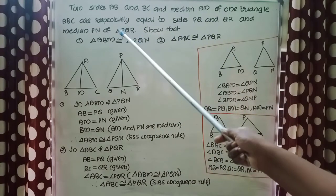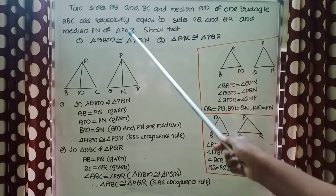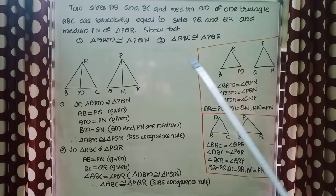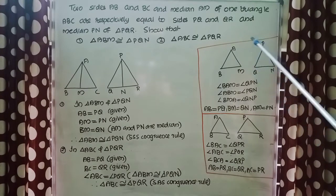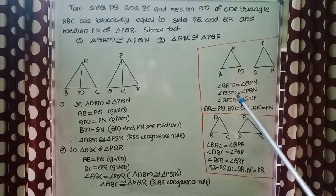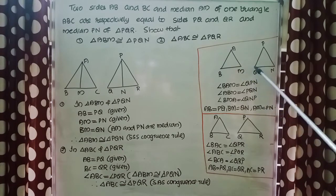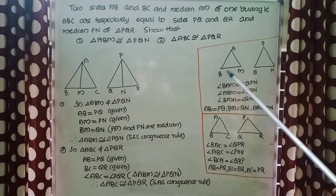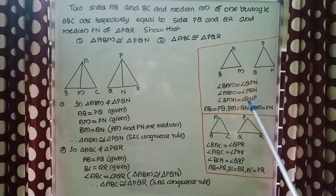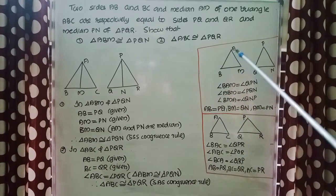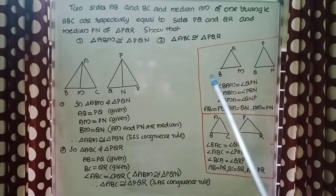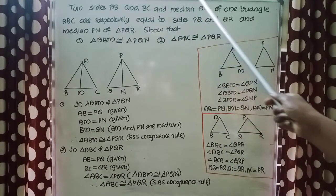Our first question is to prove triangle ABM congruent to triangle PQN. I have drawn two triangles and named them ABM and PQN. Let us write the corresponding angles and sides first. Angle BAM equals angle QPN, angle BMA equals angle QNP. For sides: AB equals PQ, BM equals QN, and AM equals PN.